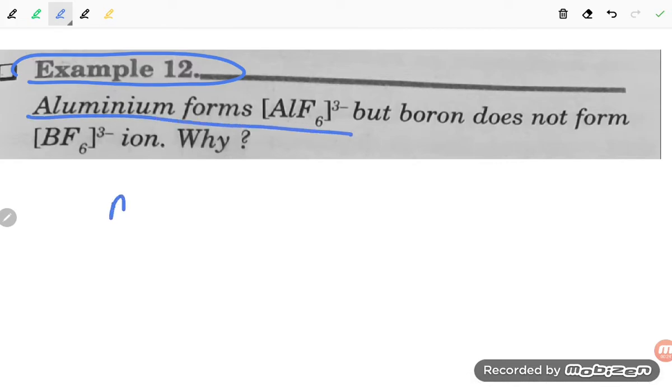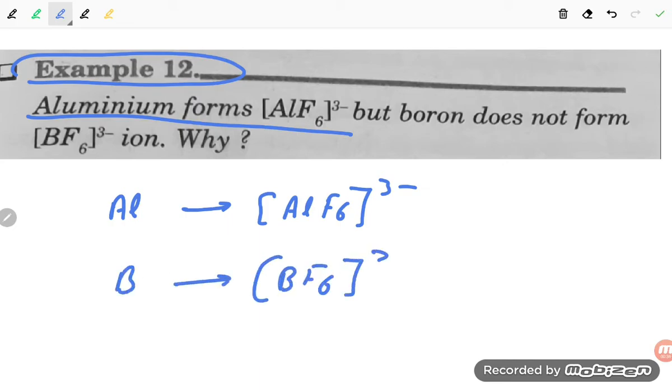The question is why aluminum is capable of forming [AlF6]³⁻ but boron does not form [BF6]³⁻.